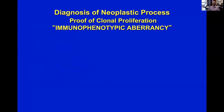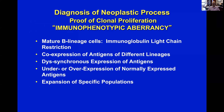How do we prove something is a neoplastic process? What you want to see is proof of clonal proliferation, and the way this is expressed in a flow cytometric study is by the detection of immunophenotypic aberrancy. Tumors essentially do five different things, and in most cases they actually do a combination — two, three, or all five of these features can be seen in a single case.